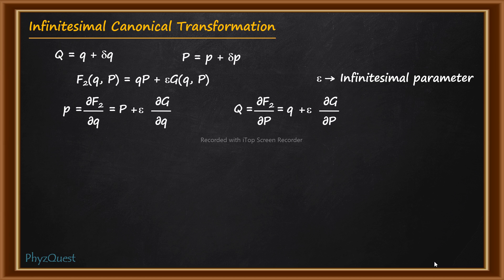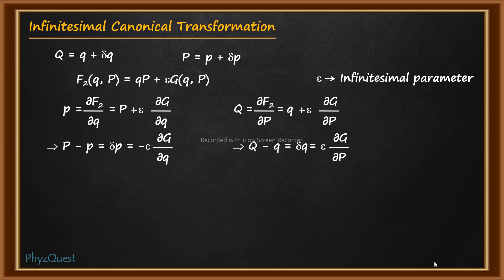From these results, we can write: δp = P − p = −ε·(∂G/∂q) and δq = Q − q = ε·(∂G/∂P).